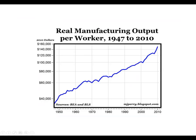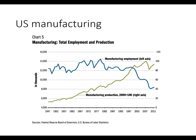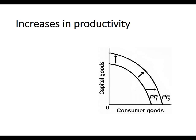Real manufacturing output per worker has really exploded because workers are getting more human capital and we have more capital goods. We're producing more stuff — manufacturing production is up — but manufacturing employment is actually decreasing, meaning we're doing it with fewer workers. Labor inputs are decreasing while capital inputs, which in economics we denote with K, are increasing. The remaining labor is able to do far more than it used to.